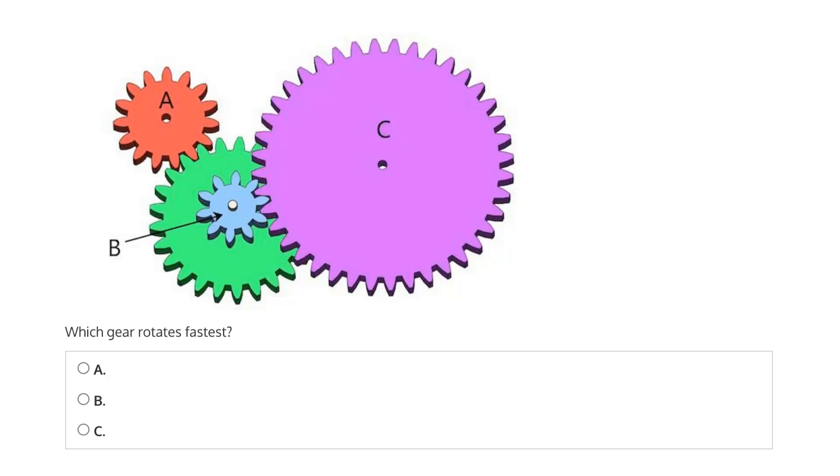Now, to answer this question, we need only to consider the relationship between the rotational speed and the number of teeth of meshed gears. And that's that the rotational speed, omega, is inversely proportional to the number of teeth.